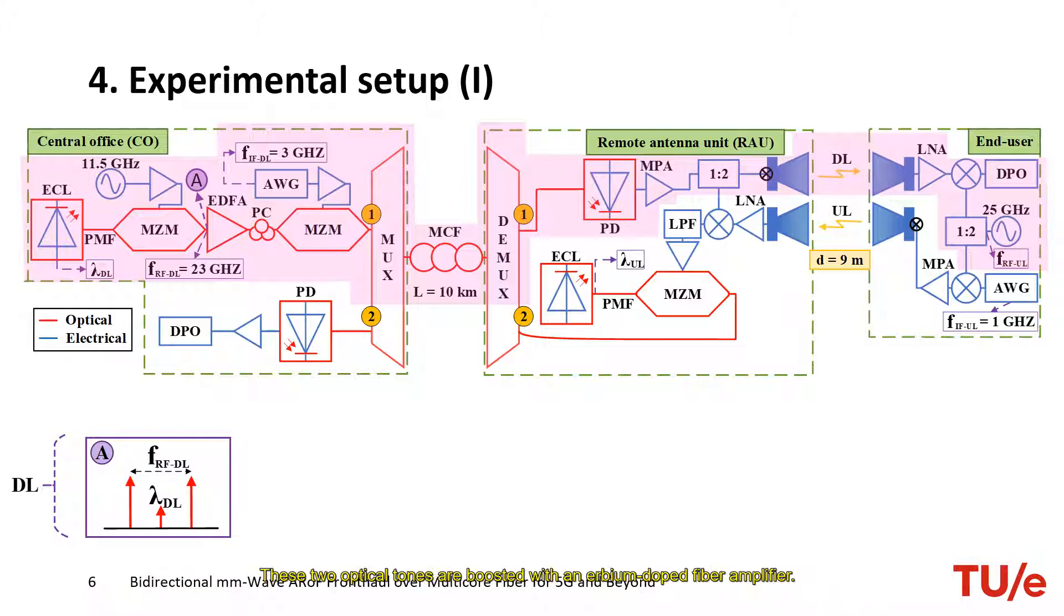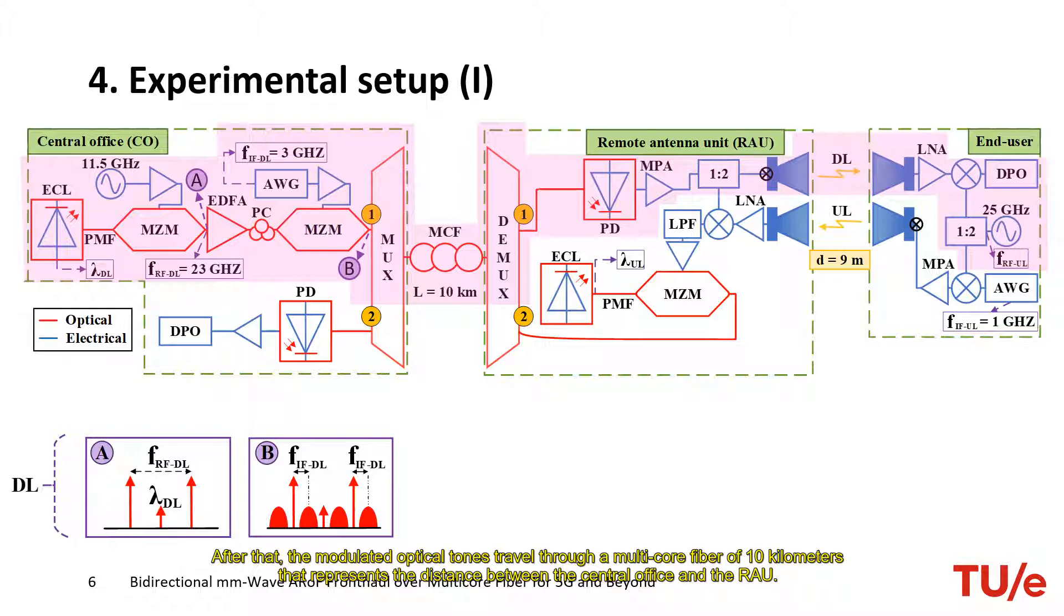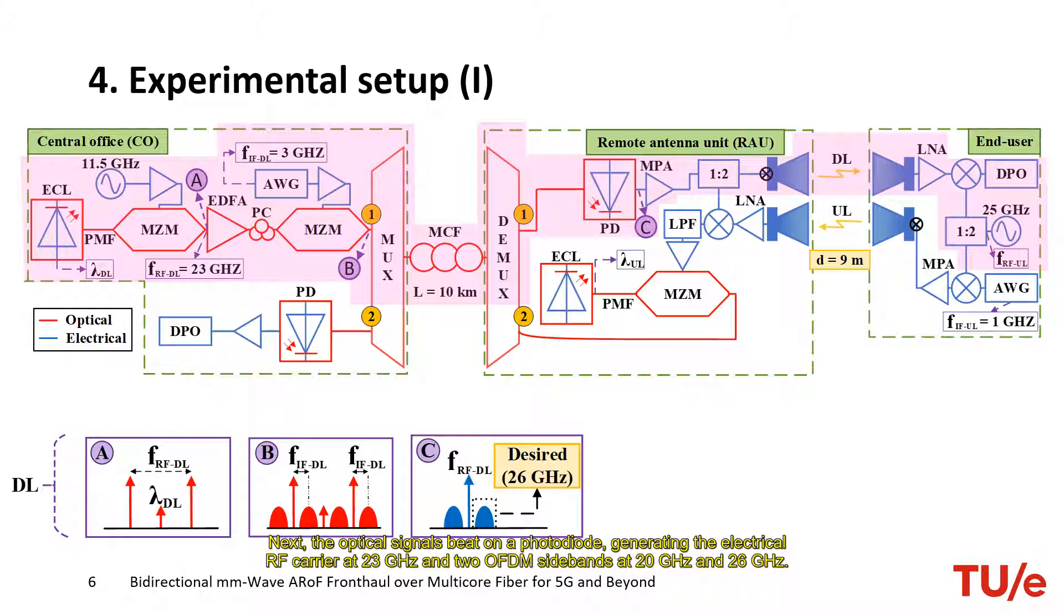Then, the boosted optical tones are modulated with the data signal by employing an arbitrary waveform generator or AWG, and a second Mach-Zehnder modulator biased in the quadrature point. After that, the modulated optical tones travel through a multicore fiber of 10 km that represents the distance between the central office and the RAU. Next, the optical signal beats on a photodiode, generating the electrical RF carrier at 23 GHz and two OFDM sidebands at 20 GHz and 26 GHz.